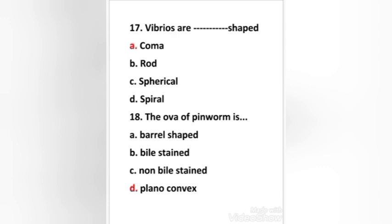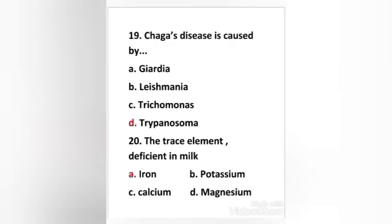Next question: the ova of pinworm is — barrel-shaped, bile-stained, non-bile-stained, or plano-convex? The right answer is option D — the ova of pinworm is plano-convex. The pinworm is also known as Enterobius vermicularis, and its egg measures 50 to 60 micrometers by 20 to 30 micrometers. They are transparent, elongate to oval in shape, and slightly flattened on one side.